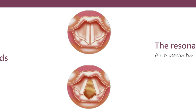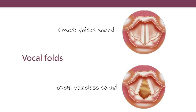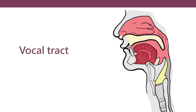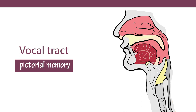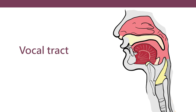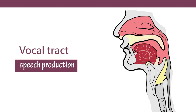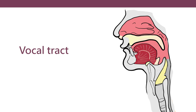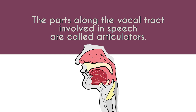If you look at this picture, the entirety of the vocal tract is depicted. It is very important to develop your pictorial memory and to memorize this like a picture rather than descriptions. This is a mid-sagittal section of the human head and neck. The parts along the vocal tract that are involved in the production of speech are called articulators, because they're involved in the articulation of speech.